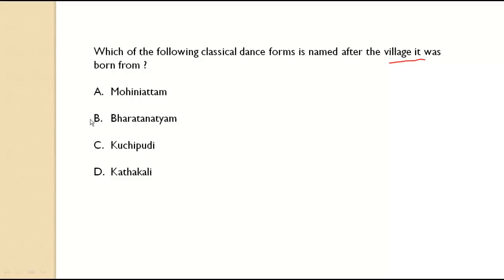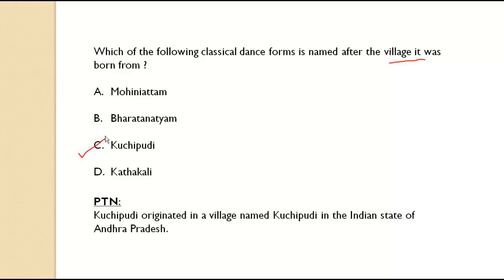The next question asks about a classical dance form whose name comes from its village of origin. The correct answer is Kuchipudi. Kuchipudi originated in a village named Kuchipudi in the Indian state of Andhra Pradesh. So remember: Kuchipudi is associated with Andhra Pradesh.